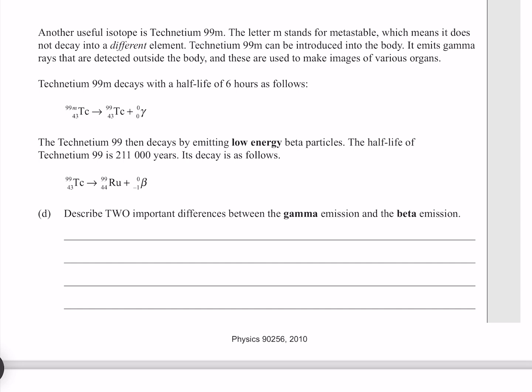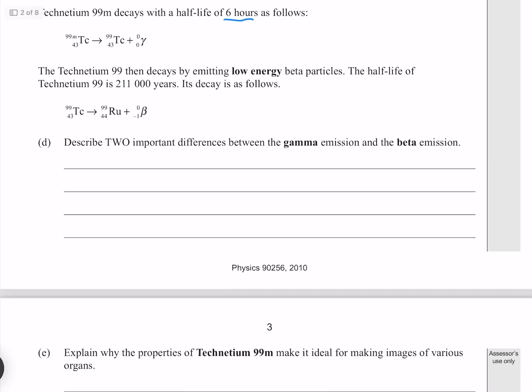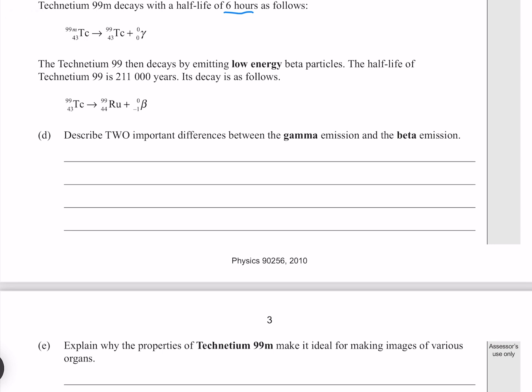Technetium-99m decays with a half-life of 6 hours, as follows. The technetium-99m then decays by emitting low-energy beta particles. The half-life of technetium-99 is 211,000 years. Its decay is as follows.